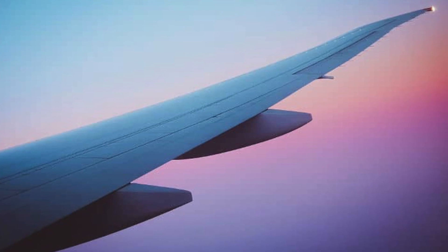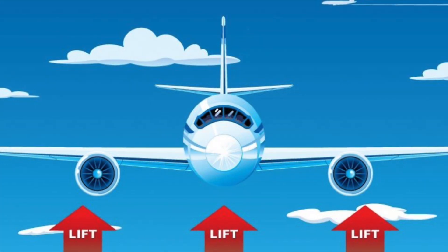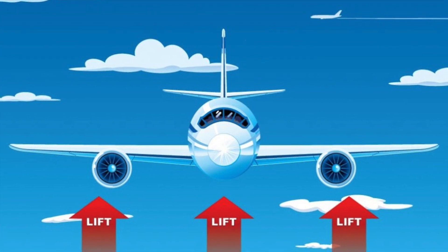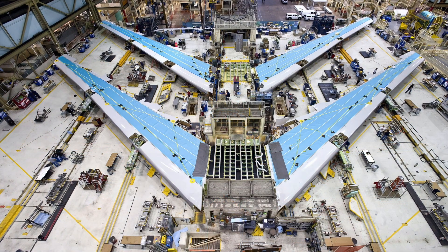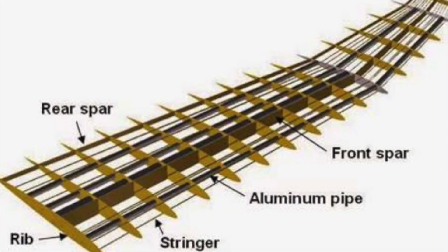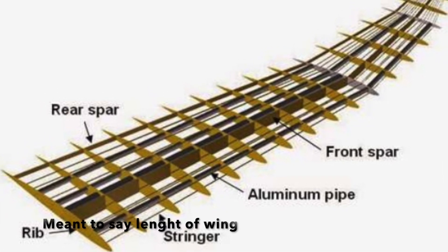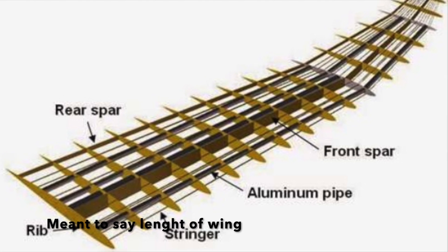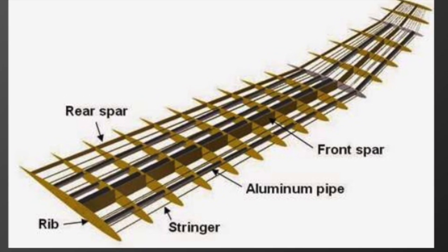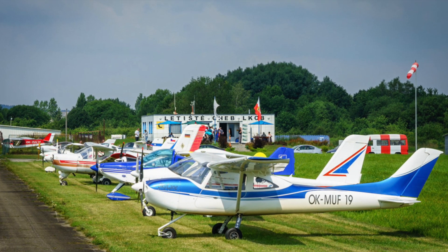Each wing is designed for different purposes. Let's go back over what wings are. They are what allow the airplane to generate lift, or the force which brings the airplane into the sky. Wings are typically constructed with aluminum. Inside of the wing are stringers and spars. The stringer runs the length of the plane while the spar runs the width.